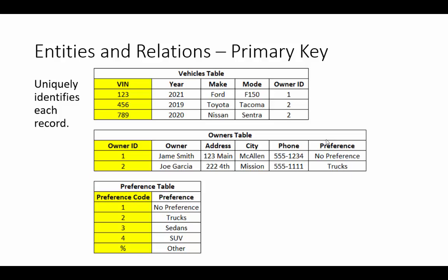Now we've moved to the primary key. The primary key uniquely identifies each record. For the Vehicles table, we use the VIN of the car — no two VIN numbers are exactly the same, so it uniquely identifies an automobile. For the Owner's Table, an Owner ID is assigned to every customer to avoid duplicates, uniquely identifying each customer. For the Preference Table, the primary key is the preference code, which uniquely identifies each record in that table.